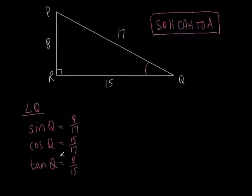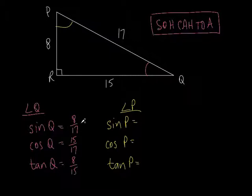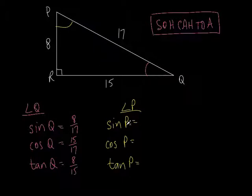There we go — all three trig functions for angle Q. Now let's do all three for angle P. The sine of P: sine is opposite over hypotenuse. Now I'm dealing with angle P up here. What's opposite angle P? That would be 15 — remember, 8 was opposite angle Q, but 15 is opposite angle P. The hypotenuse stays at 17. So sine of angle P is 15 over 17, not 8 over 17.